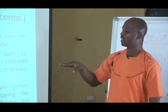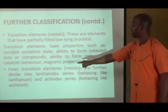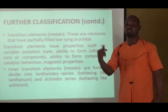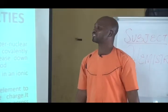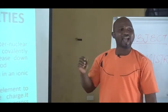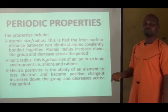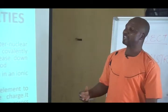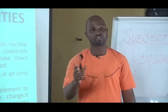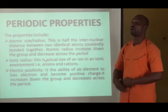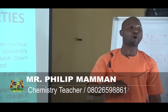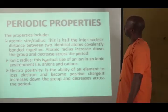The inner transition metals are further divided into two: the lanthanide series, which behave like lanthanum, and the actinide series, which behave like actinium. Looking at the classification further, group 1 elements are called alkali metals, group 2 are alkaline earth metals, group 3 are the boron family, group 4 are the carbon family, group 5 are the nitrogen family, group 6 are the oxygen family, group 7 are halogens — also called salt formers — and group 8 elements are called inert, noble, or real gases because of their stability due to octet or duplet configuration.